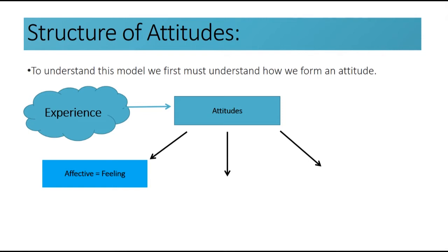The affective component of an attitude is reflected by expressions such as 'I enjoy eating Indian food' — positive; 'I hate country music' — negative; and 'I'm not interested in politics' — neutral. It is also possible to have an ambivalent response to something. An ambivalent response is when you have both positive and negative feelings towards something. For example, you might like swimming in the water because it's refreshing but dislike that you can't see through the water.